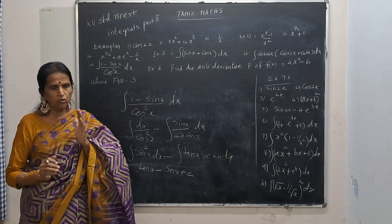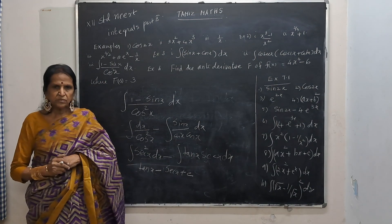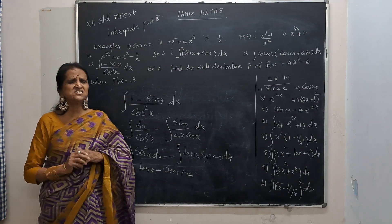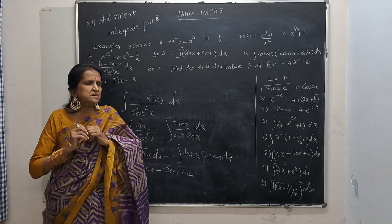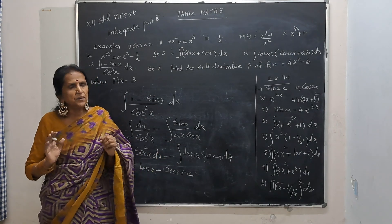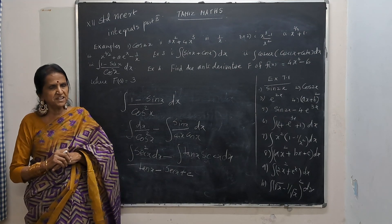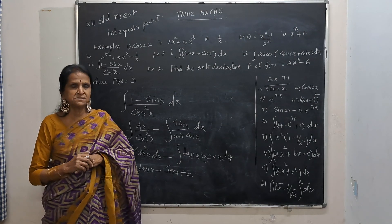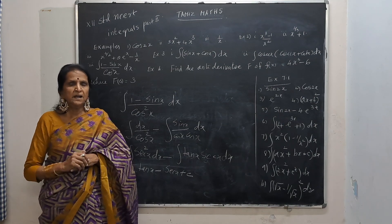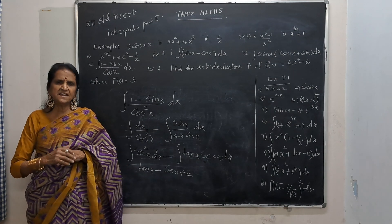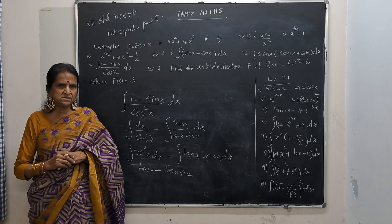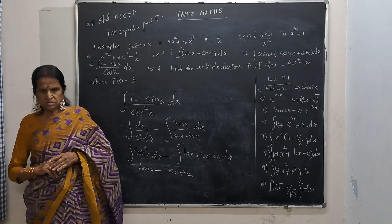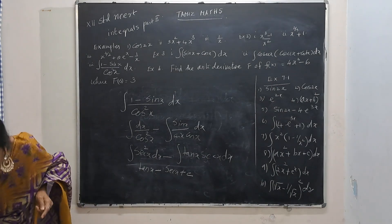So 1 minus cos x by cos squared x gives us two standard formulas: integral of secant squared x is tan x, and integral of tan x secant x is secant x. Two more formulas to our list: integral of secant squared x dx equals tan x plus c, and integral of secant x tan x equals secant x plus c.